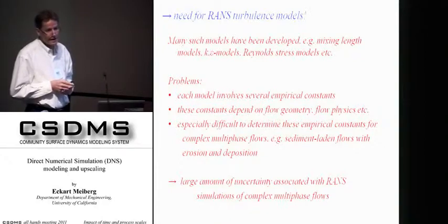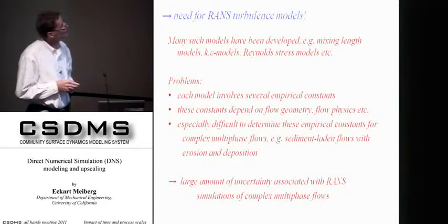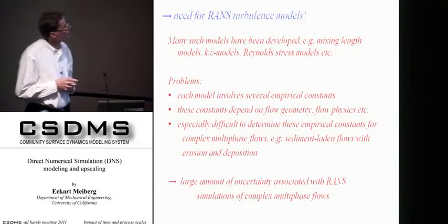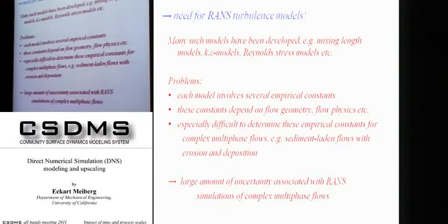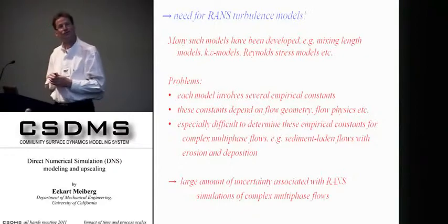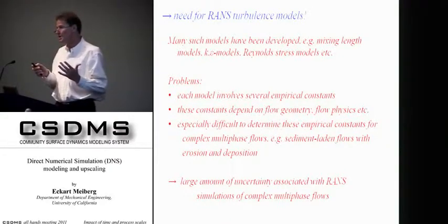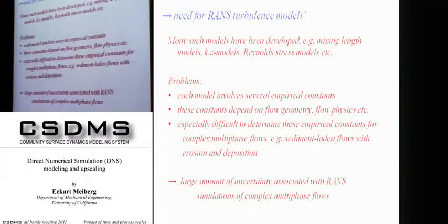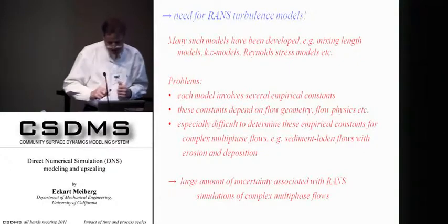Many models have been developed to capture these terms — mixing length models, k-epsilon models, Reynolds stress models, and so on. All of these involve several empirical constants, and these constants depend on the flow physics, flow geometry, and many other things. It is therefore very difficult to determine reliable values for these empirical constants, especially when looking at flows involving complex physics such as sediment transport, erosion, and deposition over complex topographies. As a result, there is a large amount of uncertainty associated with these empirical constants and therefore with the results of RANS simulations. RANS simulations offer some promise, but they have these drawbacks.